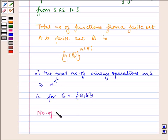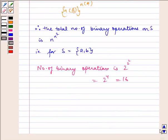the number of binary operations is 2 to the power 2 squared, which equals 2 to the power 4, which equals 16. Hence, the required answer is B.